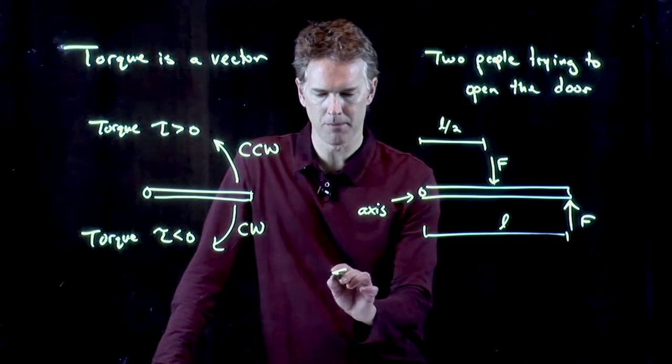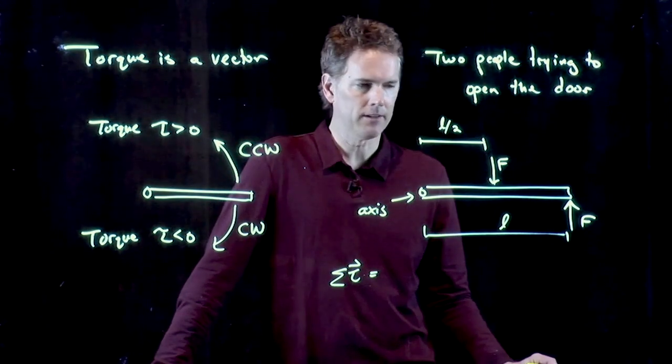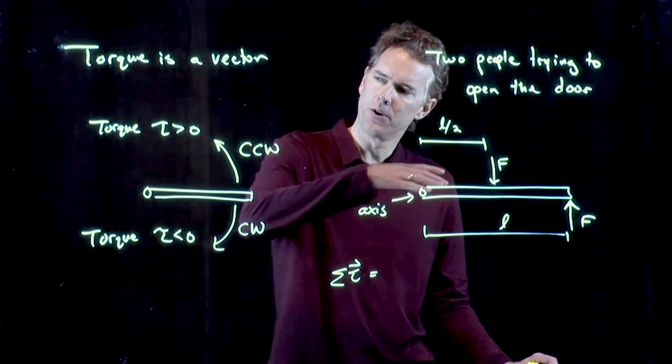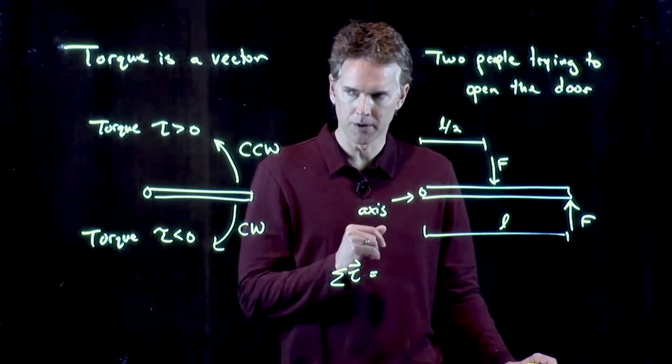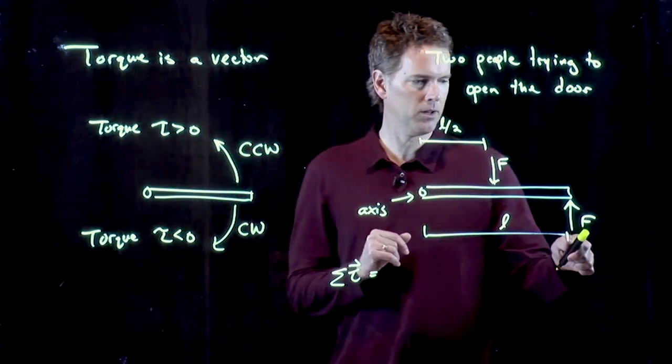All right, we need to sum up the torques. And torque is a vector, and so we have to take into account the direction. And the one that is trying to rotate the door counterclockwise is going to be the positive torque. So which one is trying to rotate it counterclockwise? It's this one.